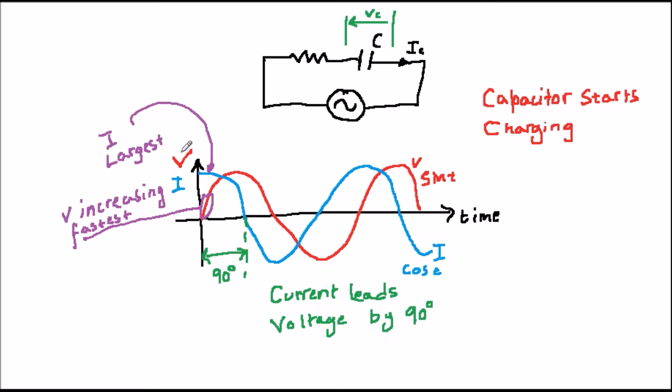If you know a bit about calculus, you'll know that this could be written as that the current varies as dV by dt. In fact, it turns out that the constant of proportionality in this formula is C, the capacitance. And so I is equal to C dV by dt.